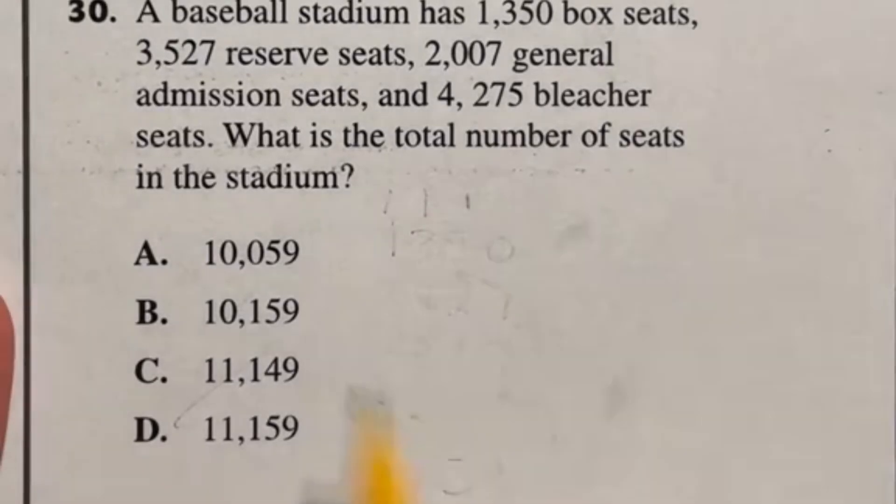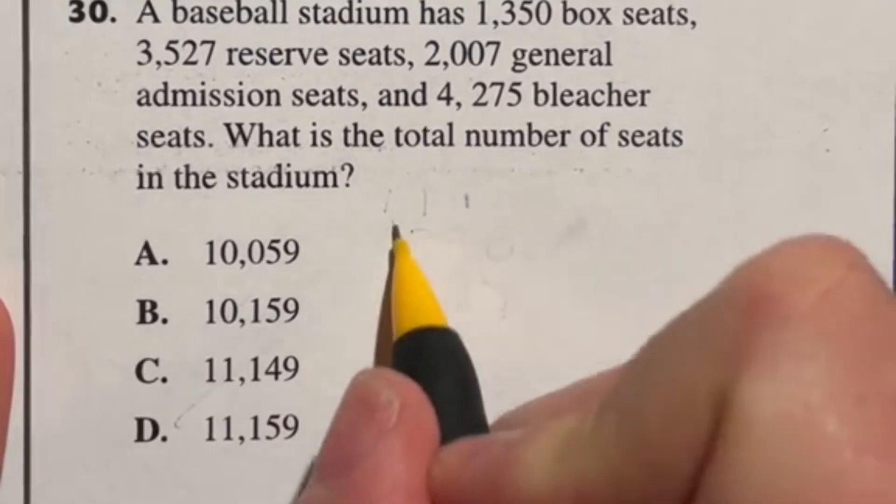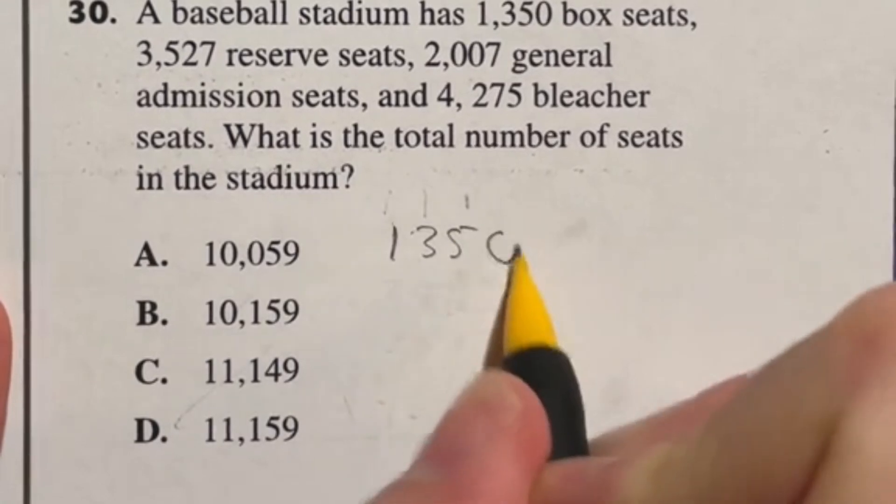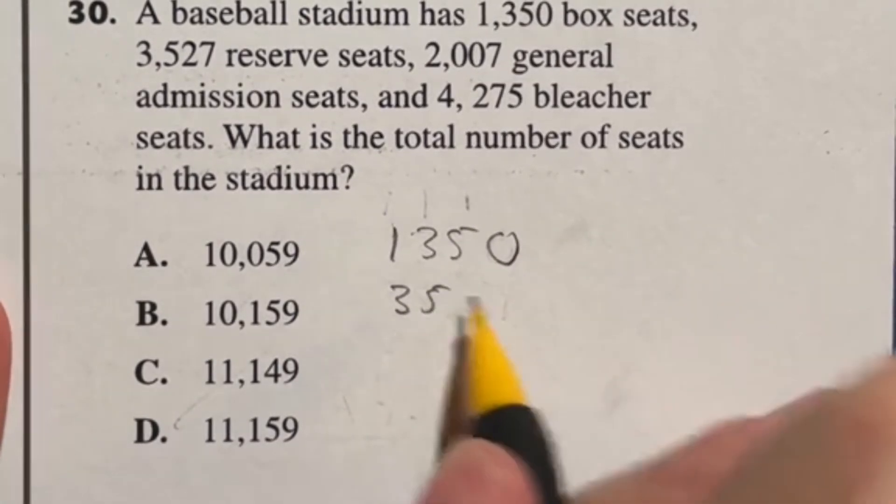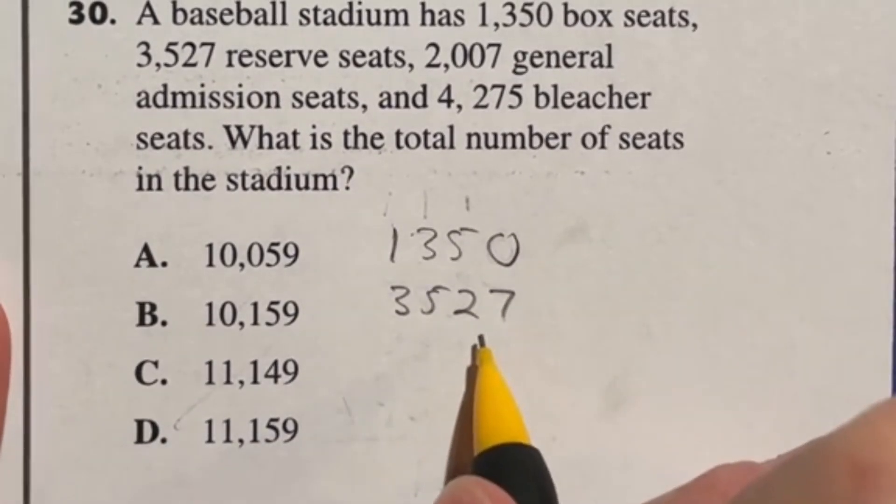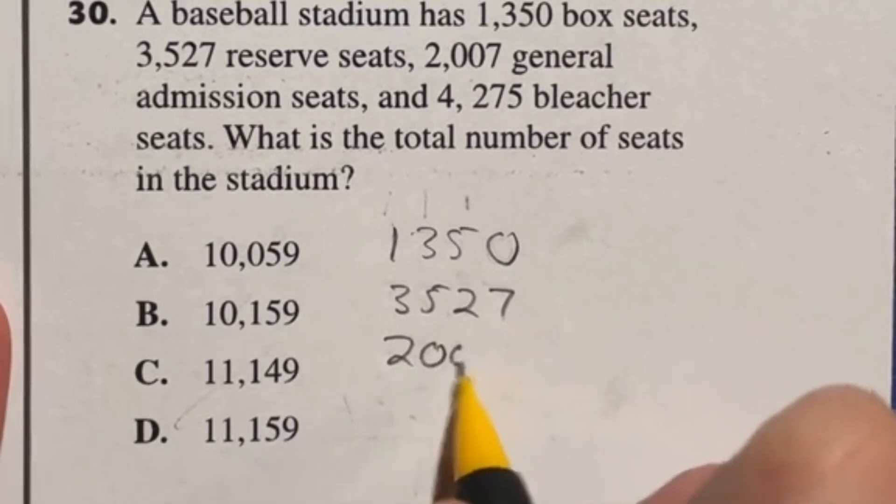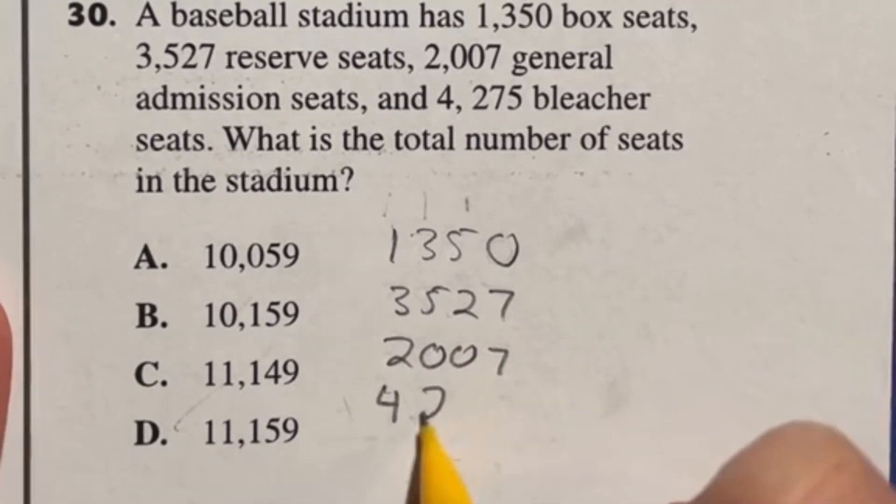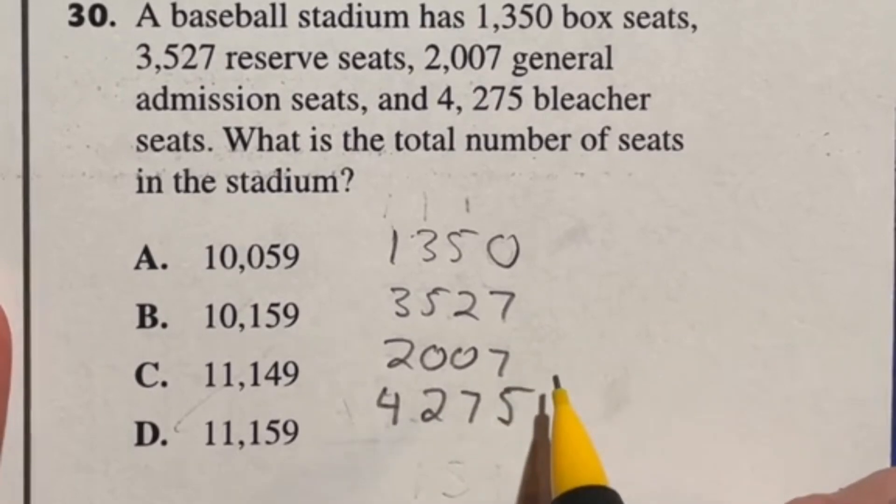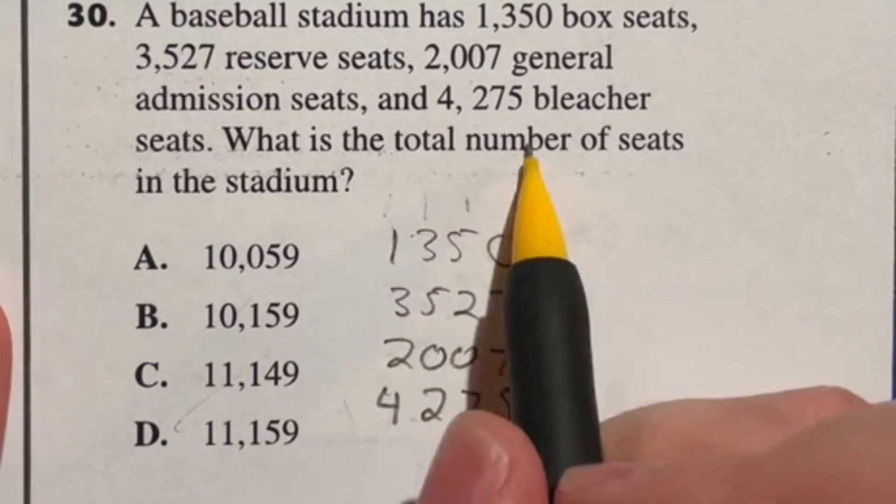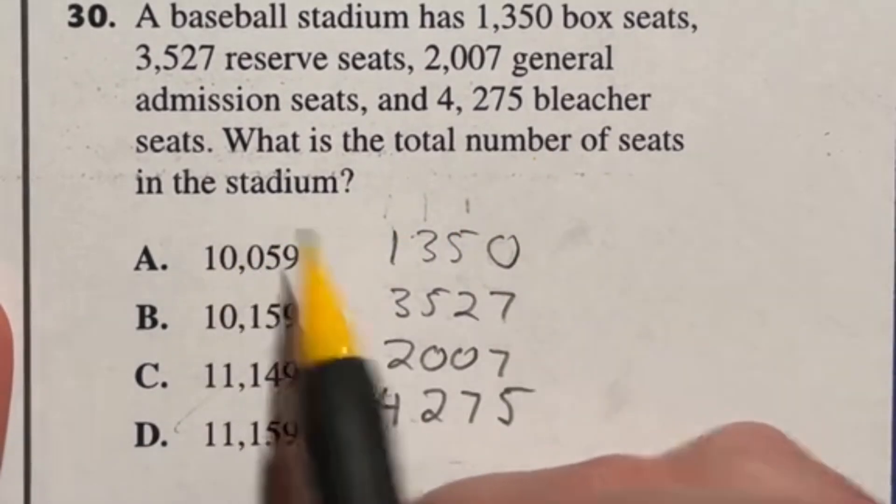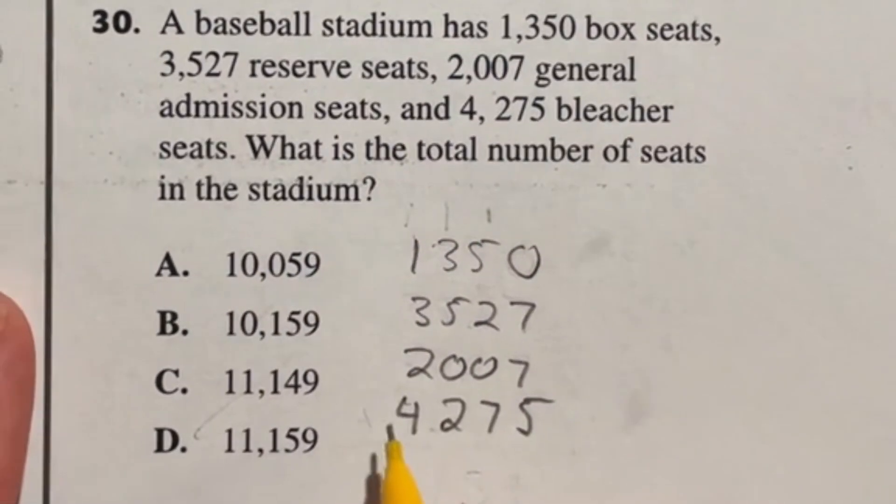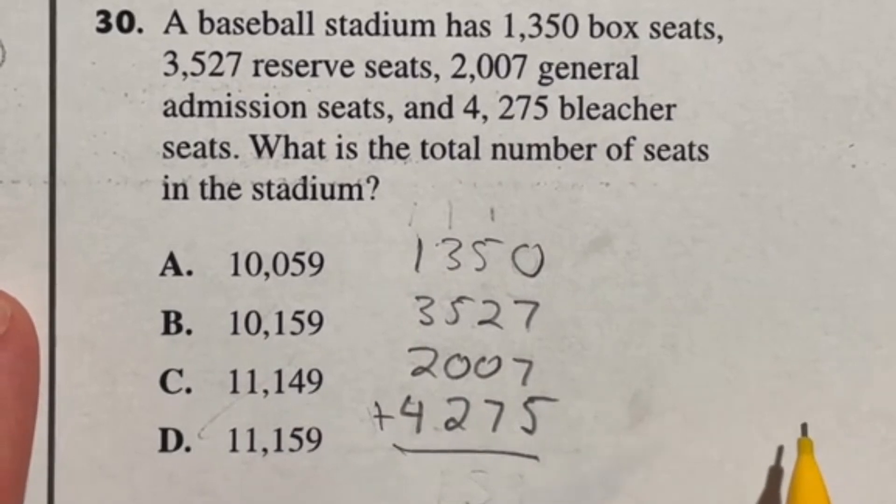Number 30 on the ASVAB. A baseball stadium has 1,350 box seats, 3,527 reserve seats, 2,007 general admission seats, and 4,275 bleacher seats. What is the total number of seats in this entire stadium? In reality here we're just adding all of these guys together. This shouldn't be all that difficult, but remember you don't have a calculator here so you do have to do it by hand.